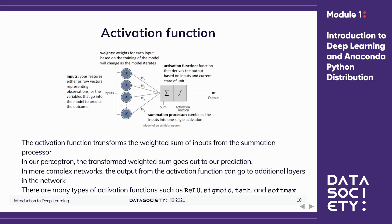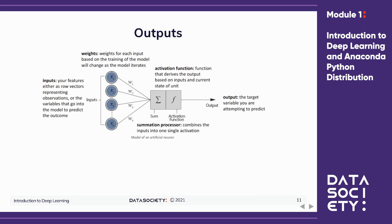A linear activation function can only represent a linear function from inputs to outputs, and therefore activation functions are normally non-linear in some way to allow non-linear functions to be learned. The output of the perceptron is whatever our intended output of the network is. In a classification problem, this will be a probability, and in a regression problem, this will be a continuous numeric variable.